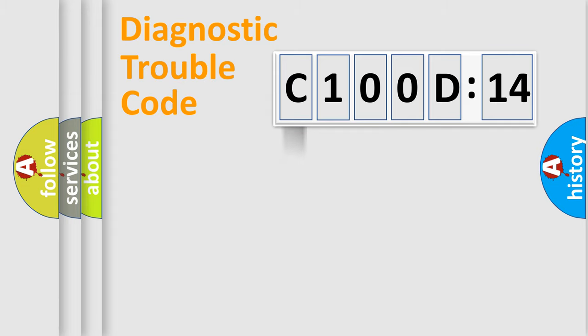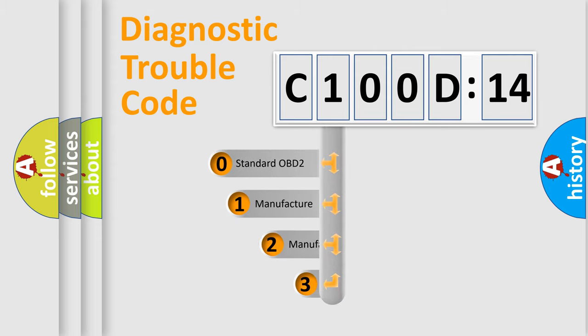Powertrain, Body, Chassis, Network. This distribution is defined in the first character code.